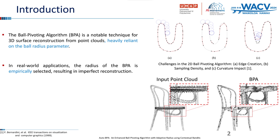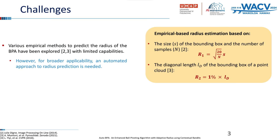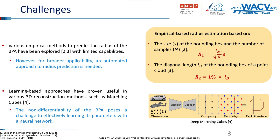An intriguing challenge arises: how can the selection of the optimal radius for the BPA algorithm be automated? Various empirical methods have been explored to predict the radius of the BPA, but their capabilities are limited. For broader applicability, an automatic approach to radius prediction is essential. Learning-based approaches have demonstrated utility in numerous surface reconstruction methods, such as marching cubes. However, the non-differentiability of the BPA presents a significant obstacle to effectively learning its parameters using a neural network.